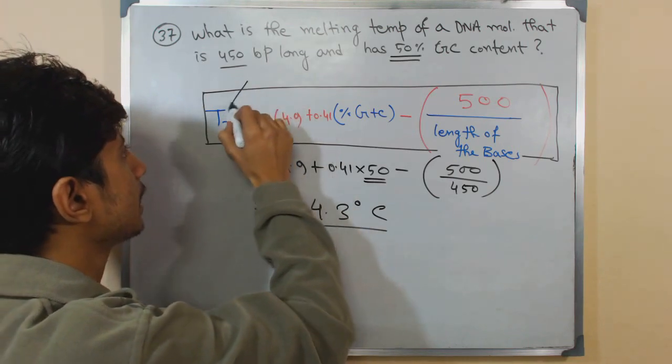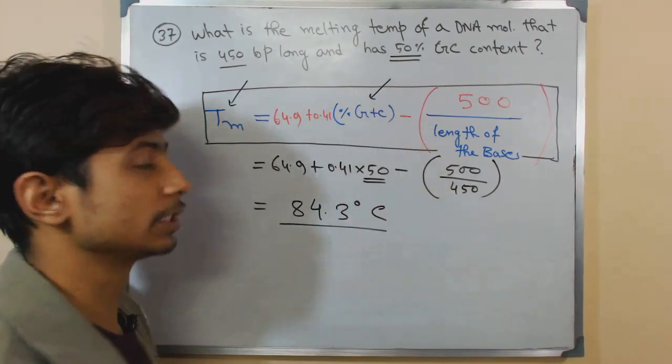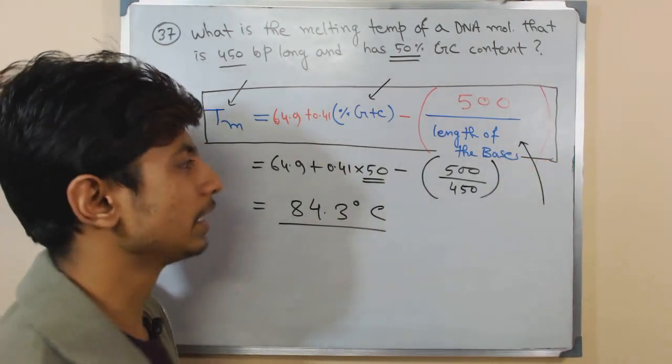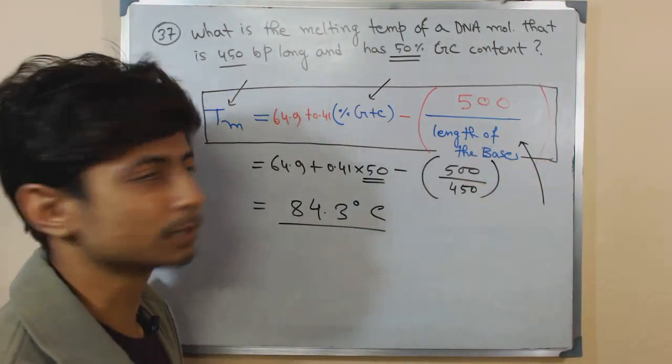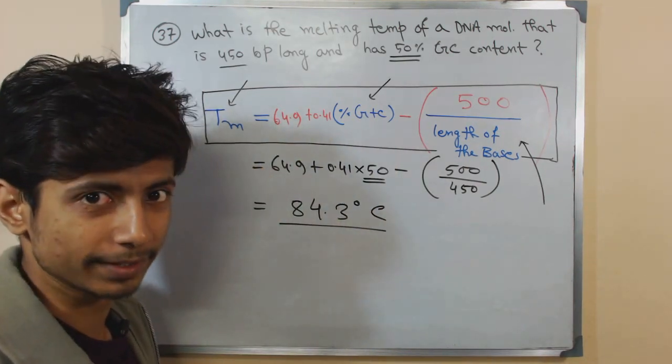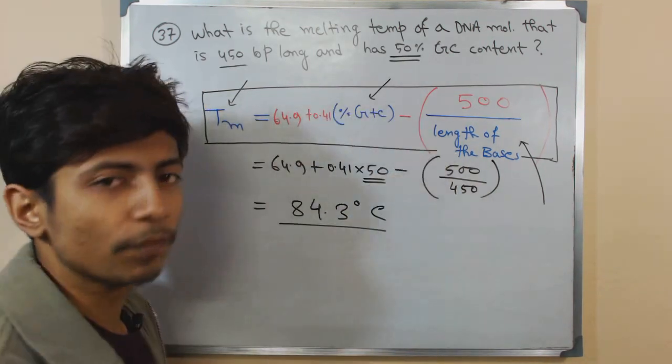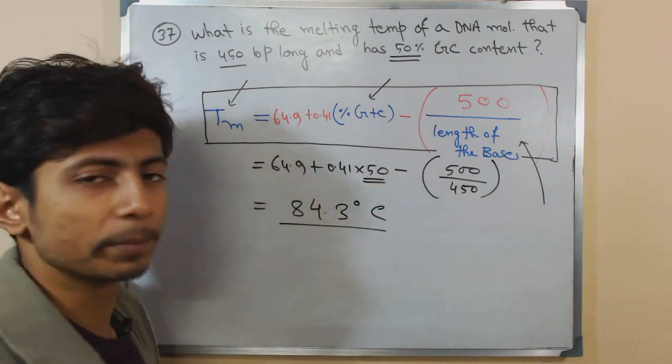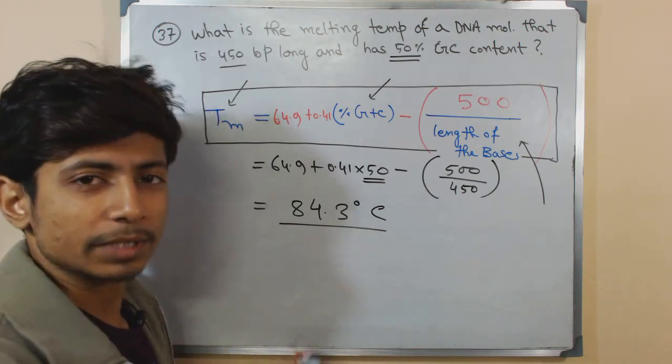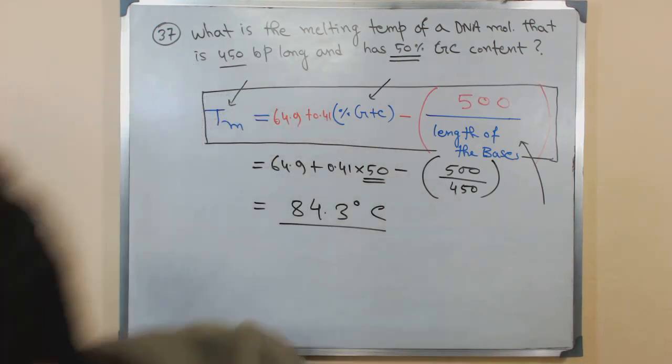They can ask you to calculate TM, they can ask you to calculate the percent GC content of a particular DNA, or they can want to know the length of the bases by giving you the percent GC and melting temperature. This is a very versatile formula to calculate so many different parameters from one or two known parameters. That's it guys, enjoy!